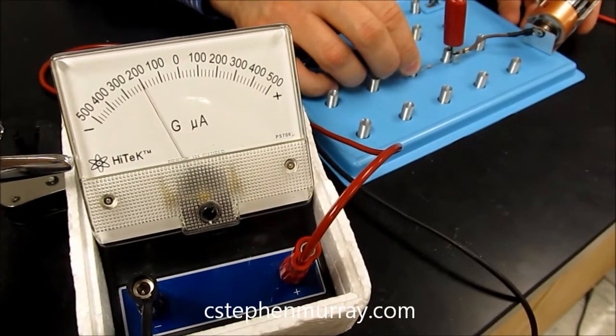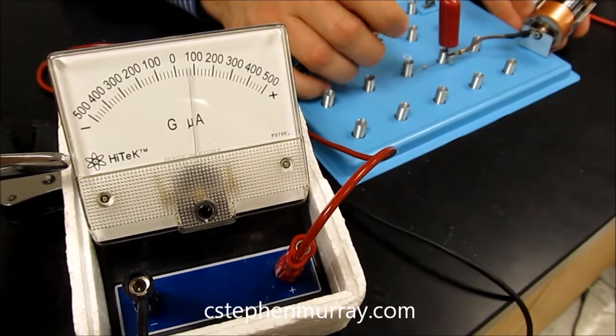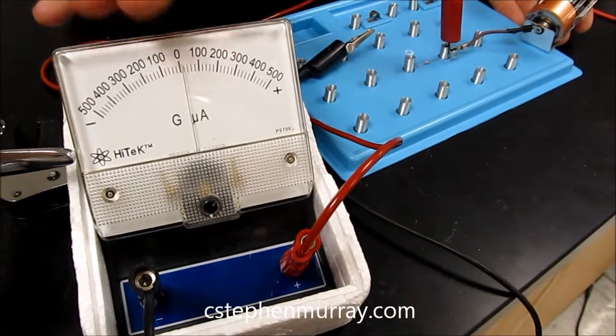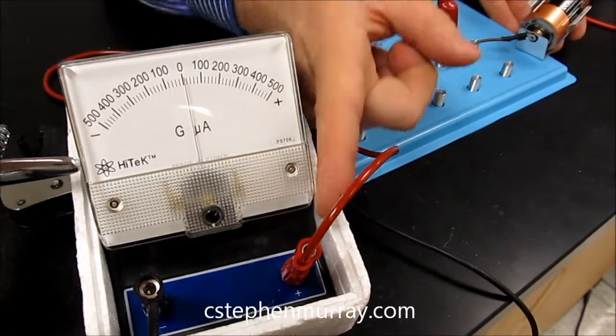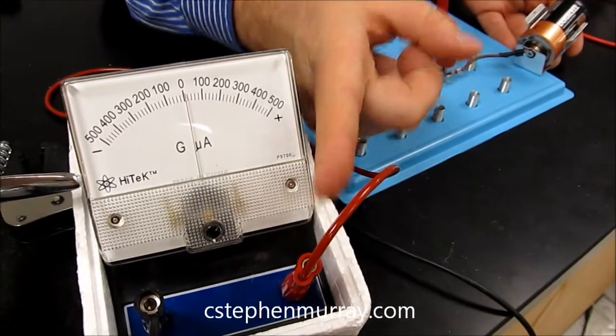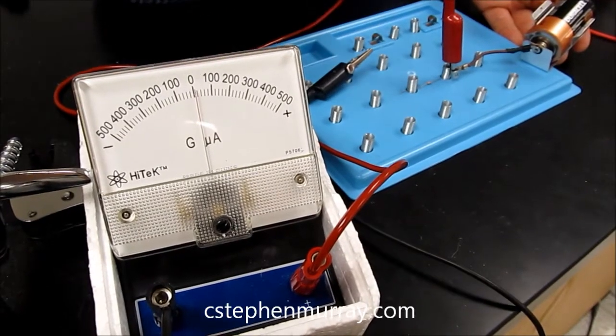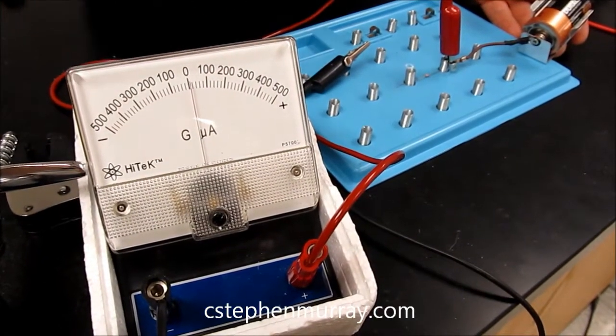So we now have an indicator. All this circuit is showing us, is proving to us, what the galvanometer tells us. If positive current flow flows into the red, it reads positive. If positive current flow flows into the black, it reads negative.